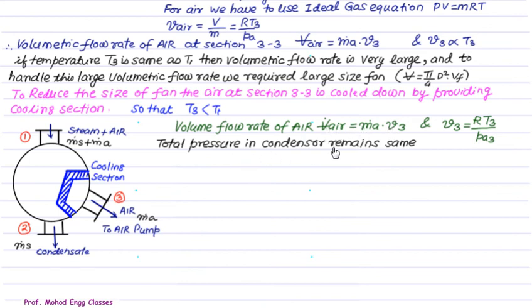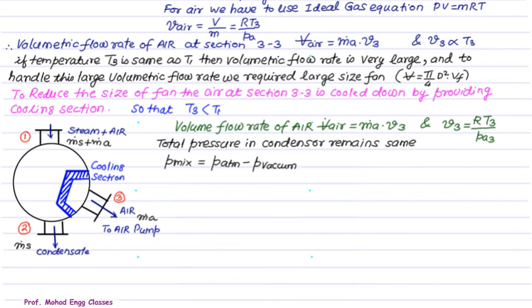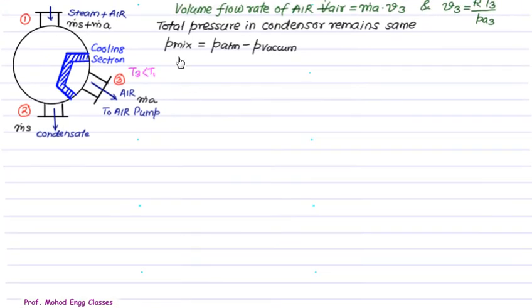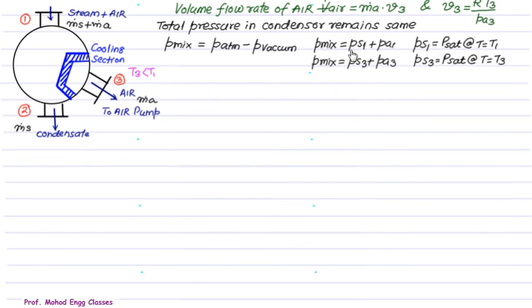The total pressure in the condenser remains same. The total pressure in the condenser remains same. So P mix is equal to P atmospheric minus P vacuum. P atmospheric is same, P vacuum we have to find out. P mix, this is normally provided to you, so you can find out P mix. P mix is also equal to, at section 1, we have PS1 plus PA1. PS1 can be obtained from PSat at temperature T1.